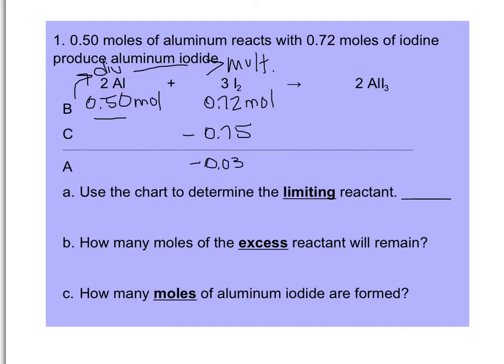Think about this: is it possible to have a negative number of moles? No — it's not. So if you do this calculation and get a negative result, you know you have to change your assumption. It's actually not the aluminum that runs out, but rather the iodine.